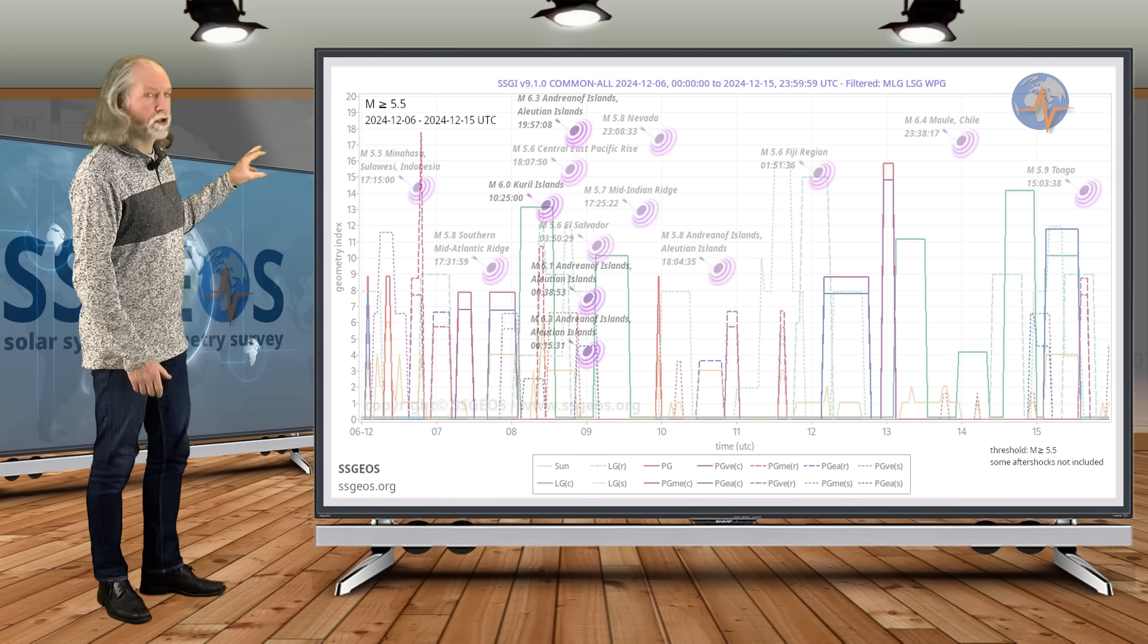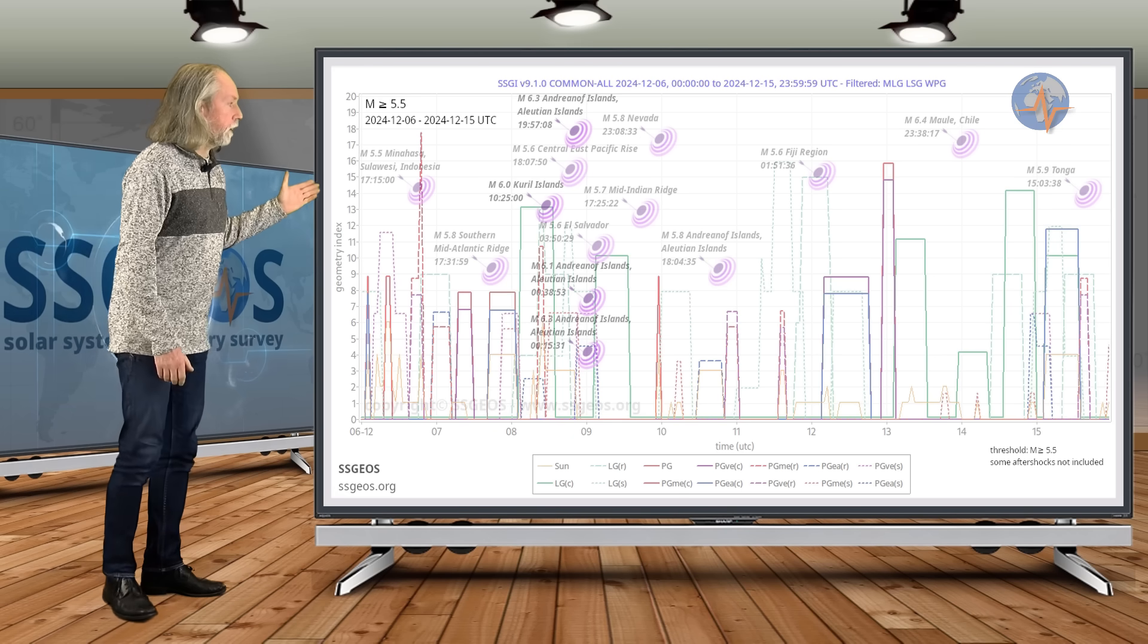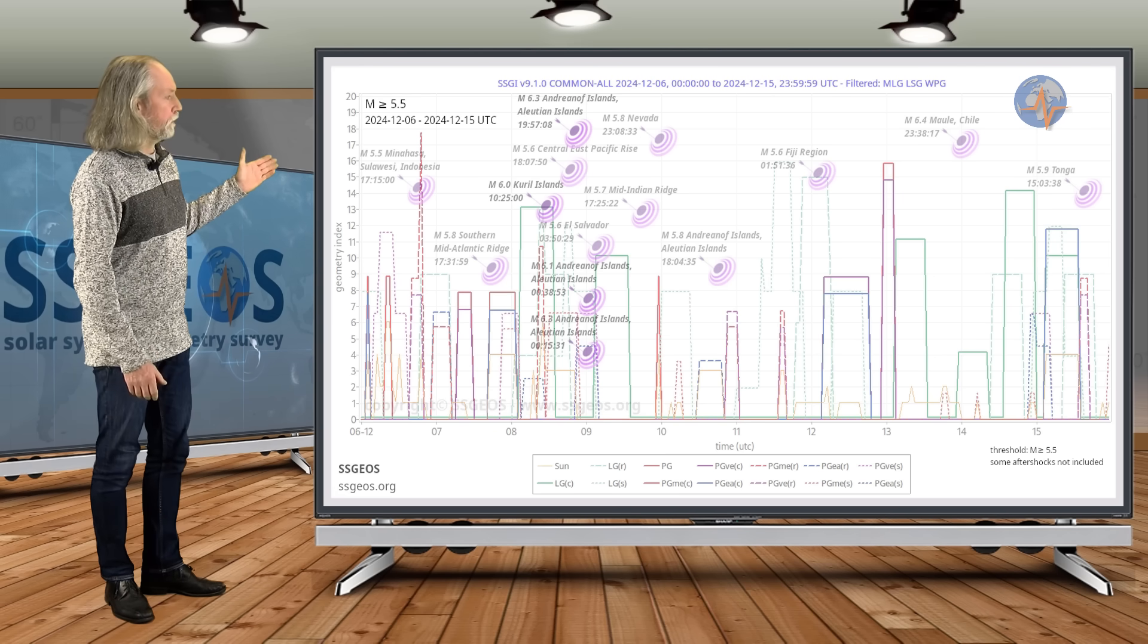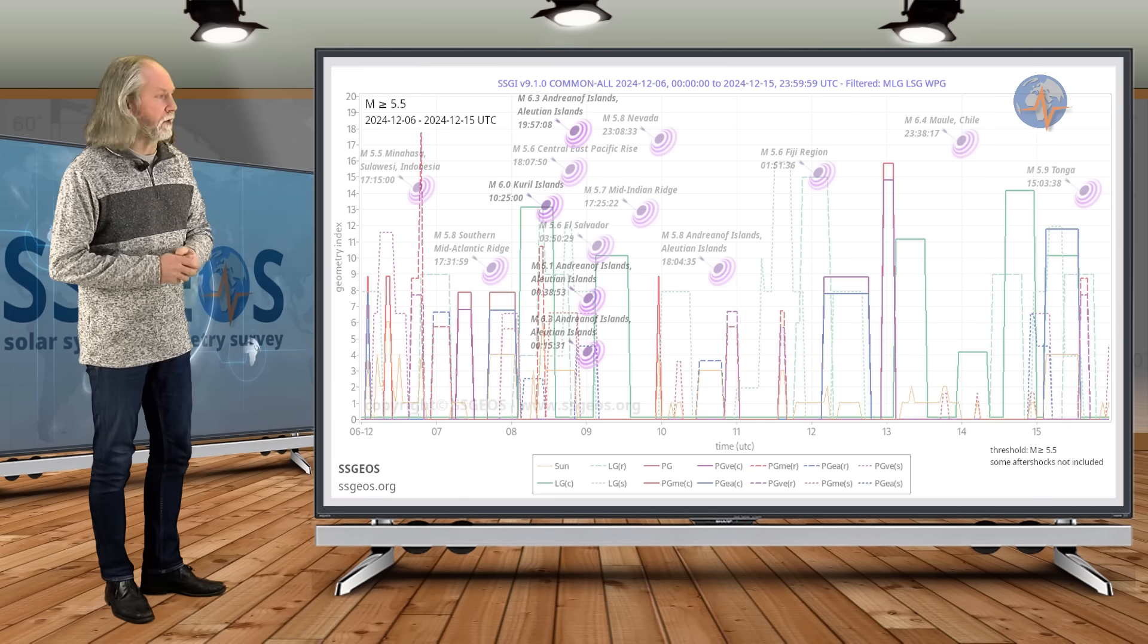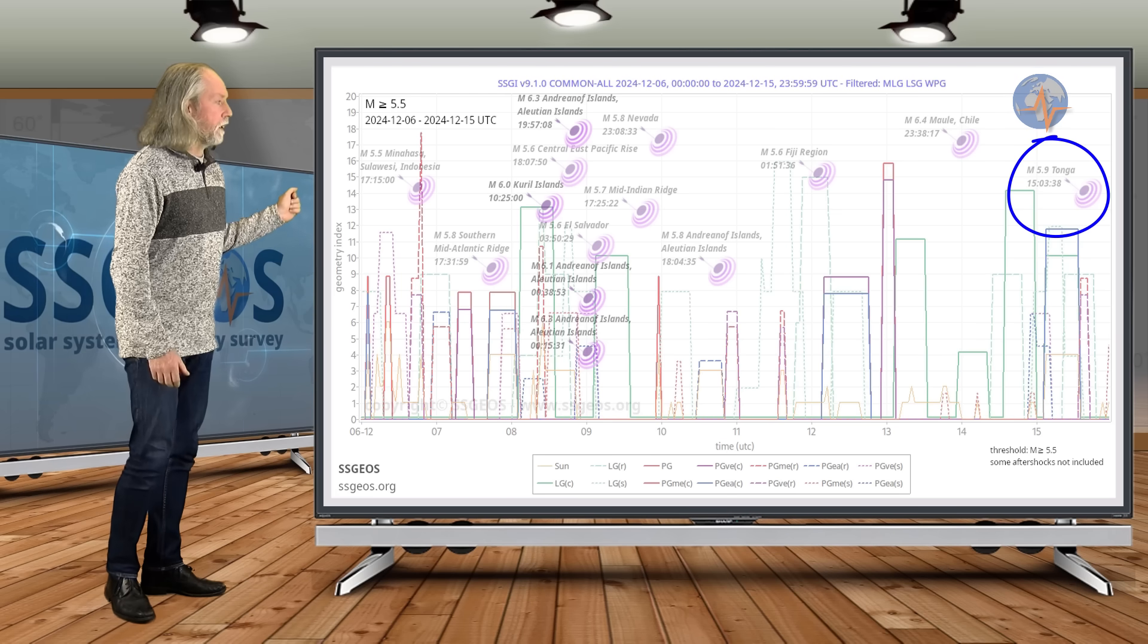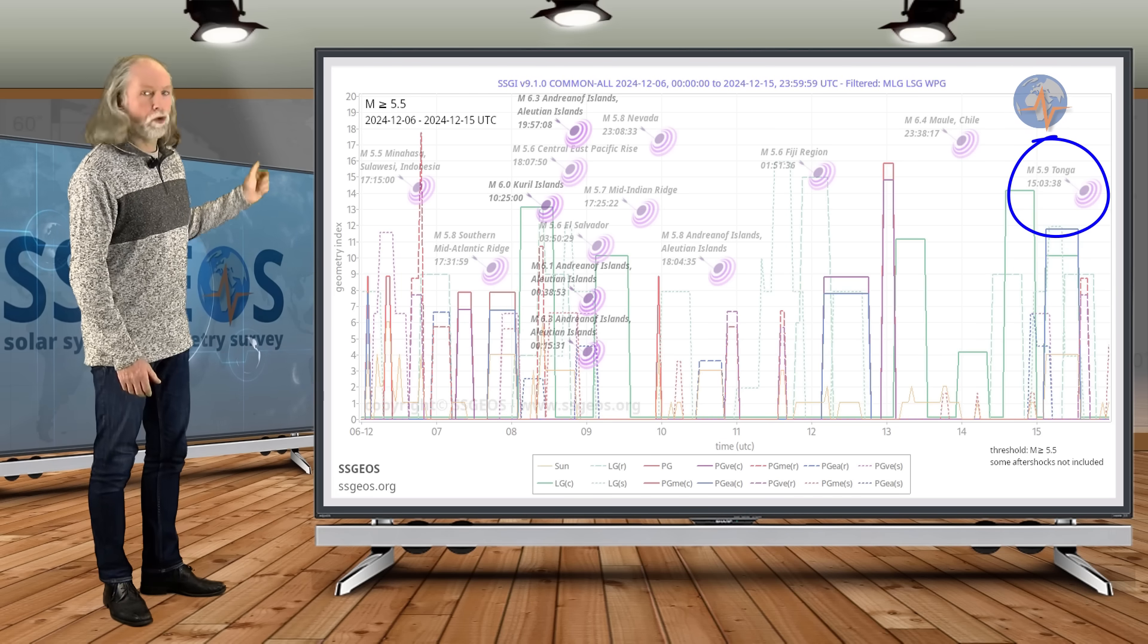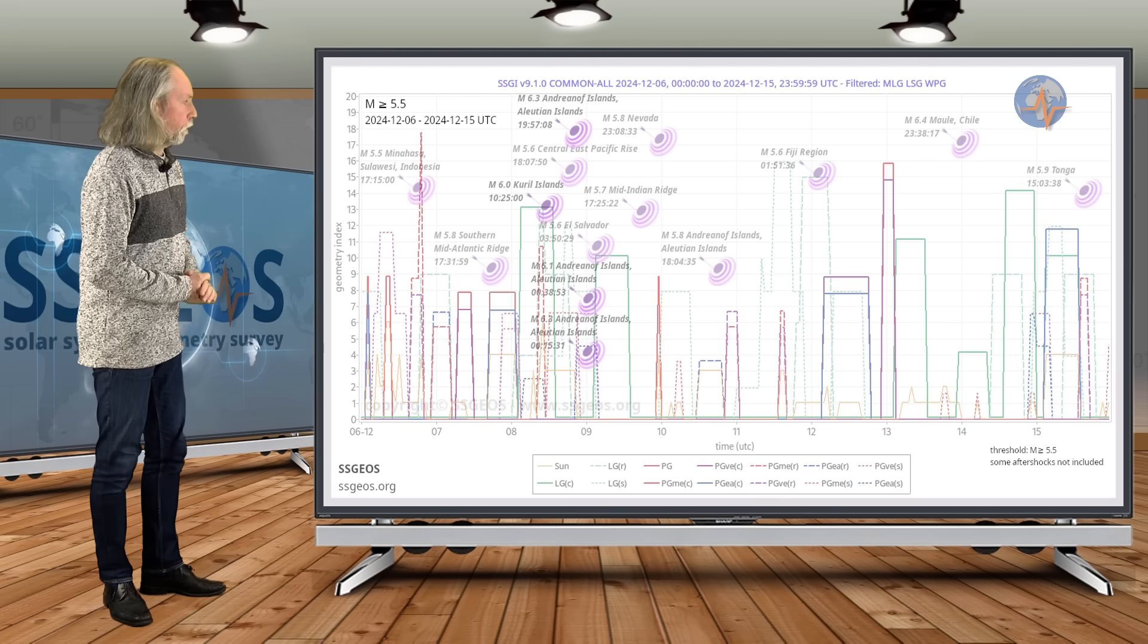Then with the full moon, we had the lunar conjunction with Jupiter later on the 14th. That may still result in a larger seismic event later today or tomorrow, but we see this 5.9 in Tonga just following this lunar conjunction with Jupiter and also the full moon on the 15th.